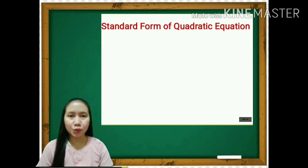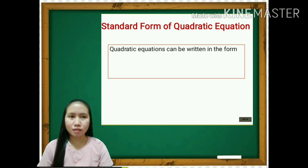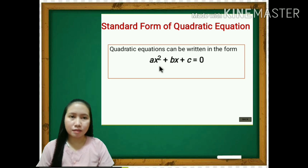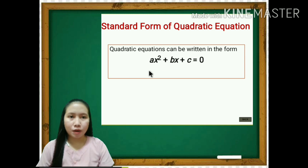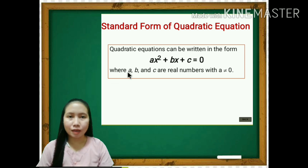Let's have first a review about the standard form of quadratic equation. Quadratic equations can be written in the form ax squared plus bx plus c is equal to 0, where ax squared is the quadratic term, bx is the linear term, and c is the constant term, where a, b, and c are real numbers with a not equal to 0.